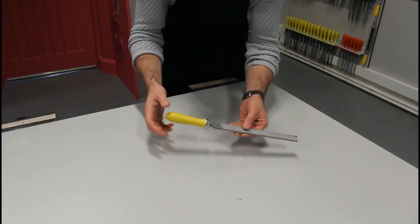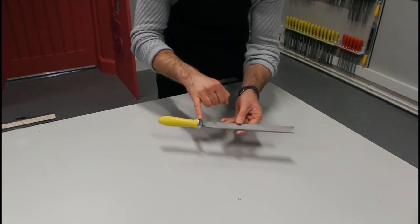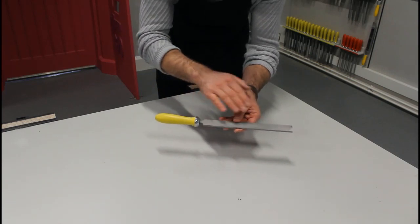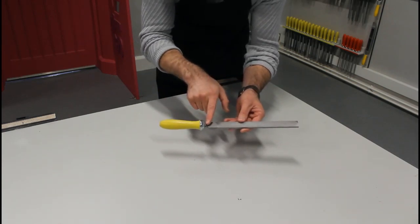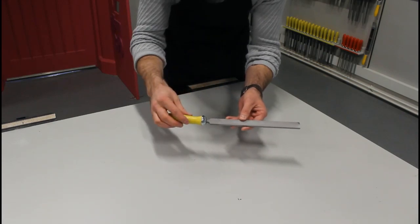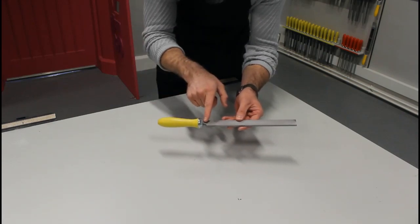This is a flat file. It's made up of a handle. This part of the handle is called a furl. This steel part sticks into this handle here. This part here that sticks in is called a tang.